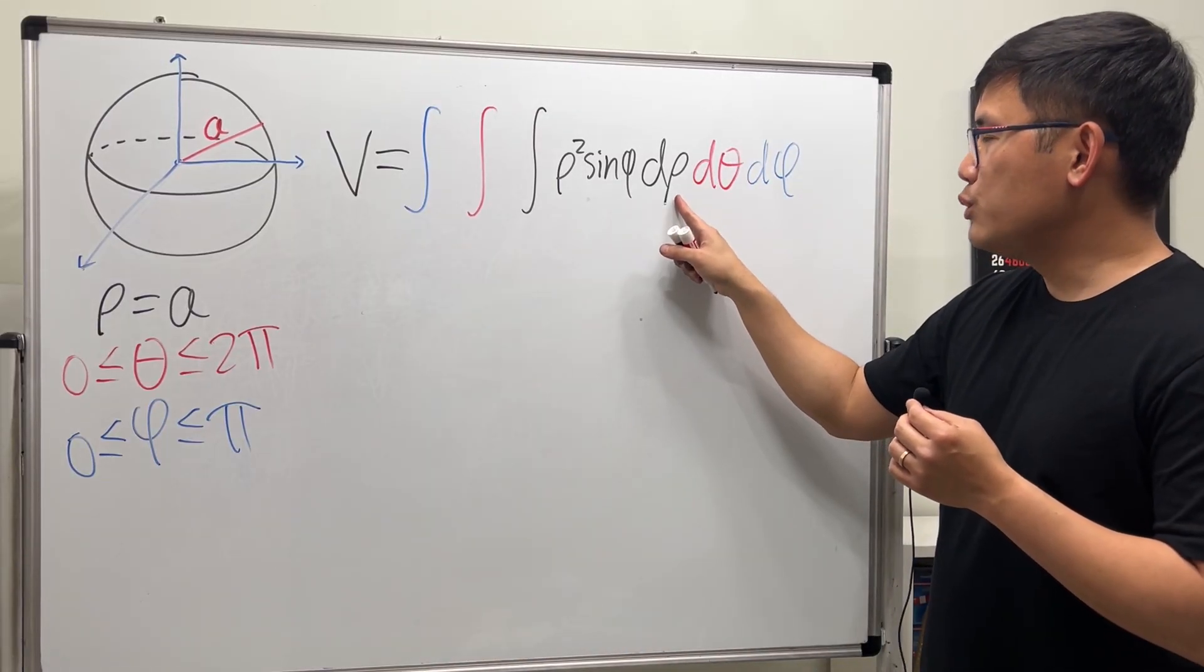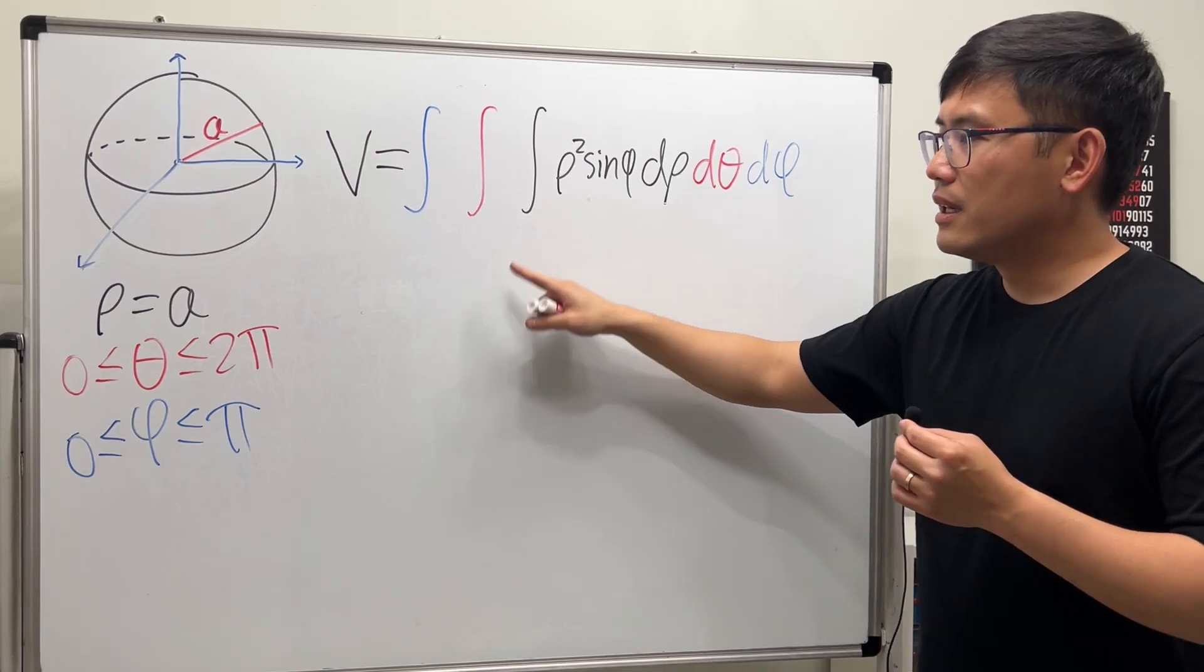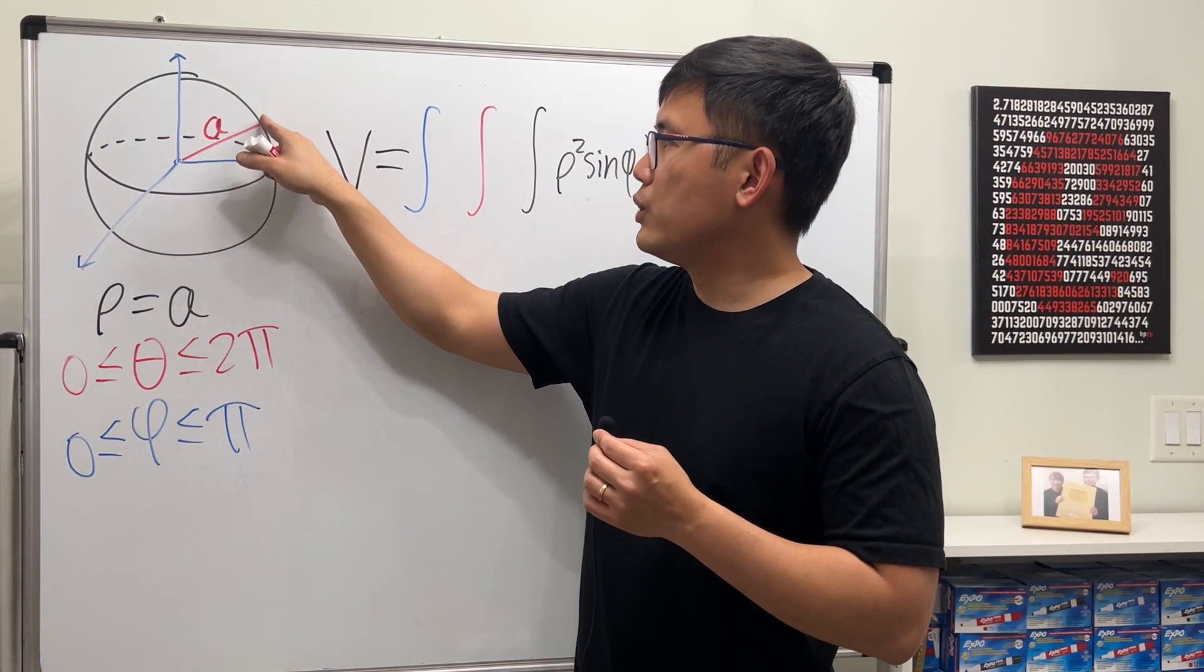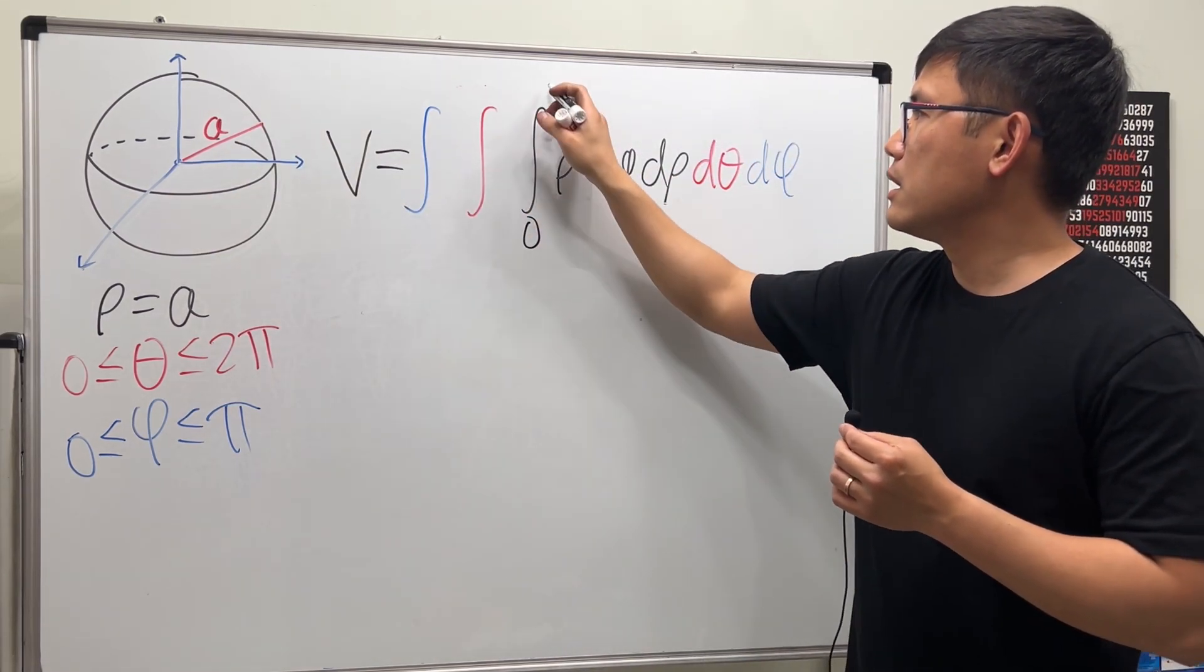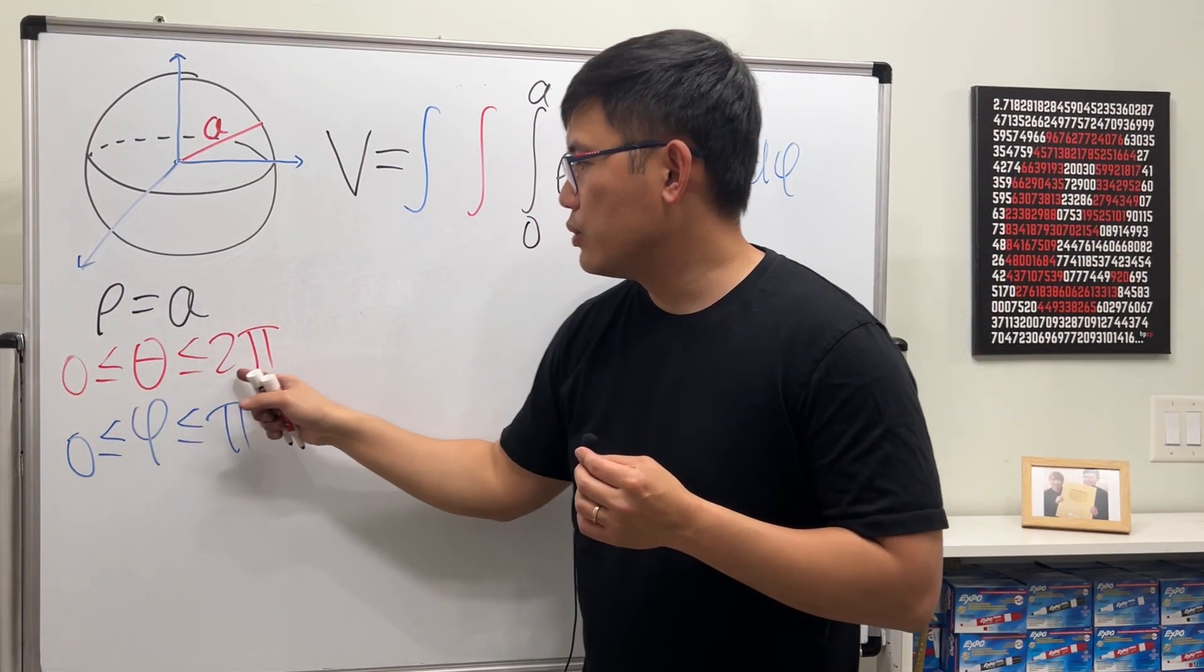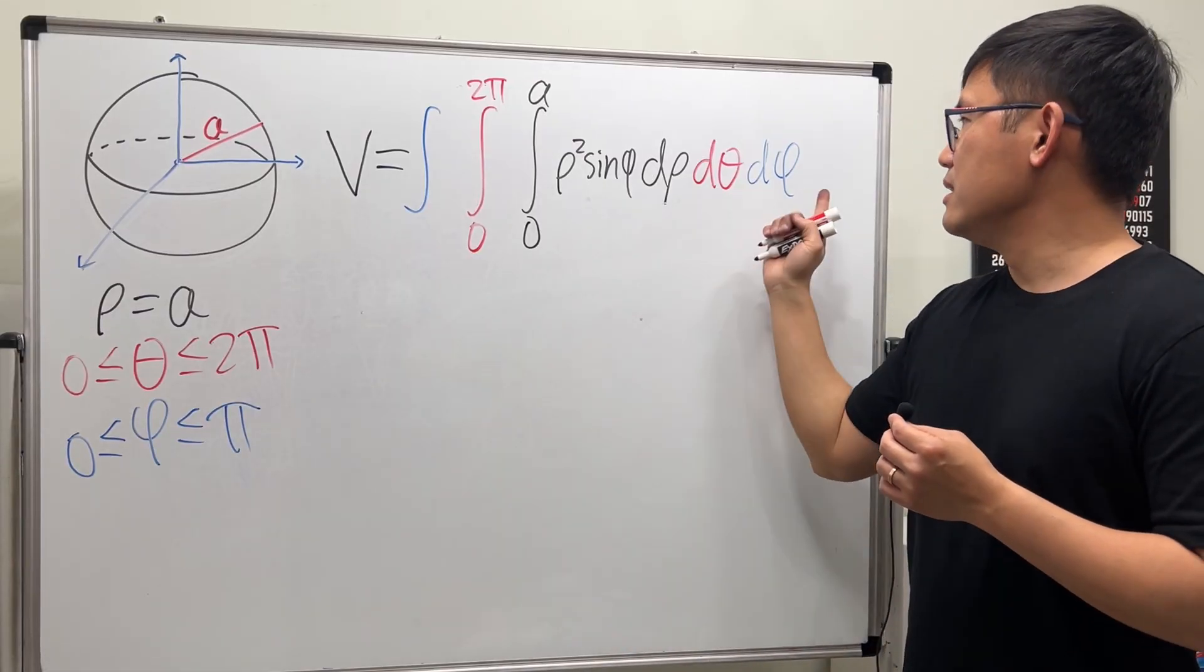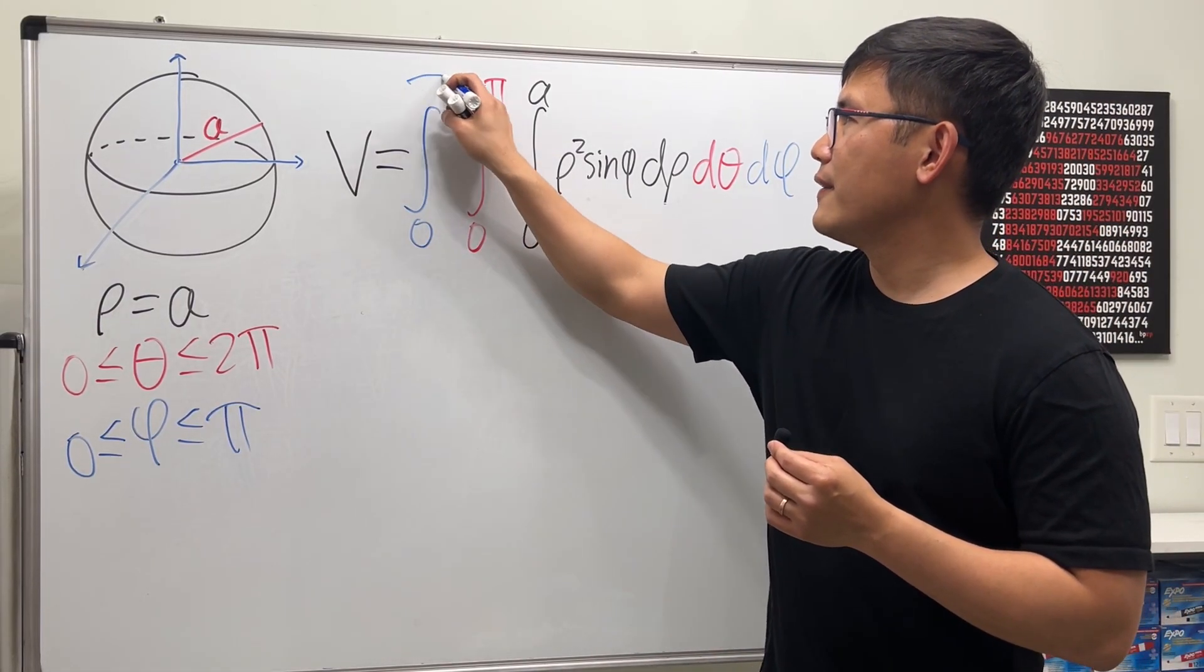Now, I put down dρ first, most inner, so I'm going to look at this. It's just a, but it's from the origin to the sphere, so it's 0 to a. Next, θ is 0 to 2π. Lastly, φ is 0 to π. Cool.